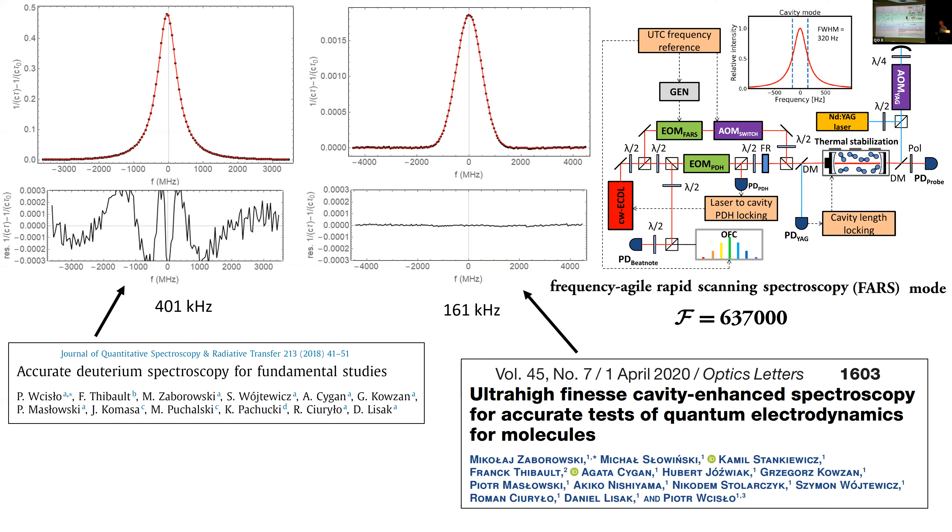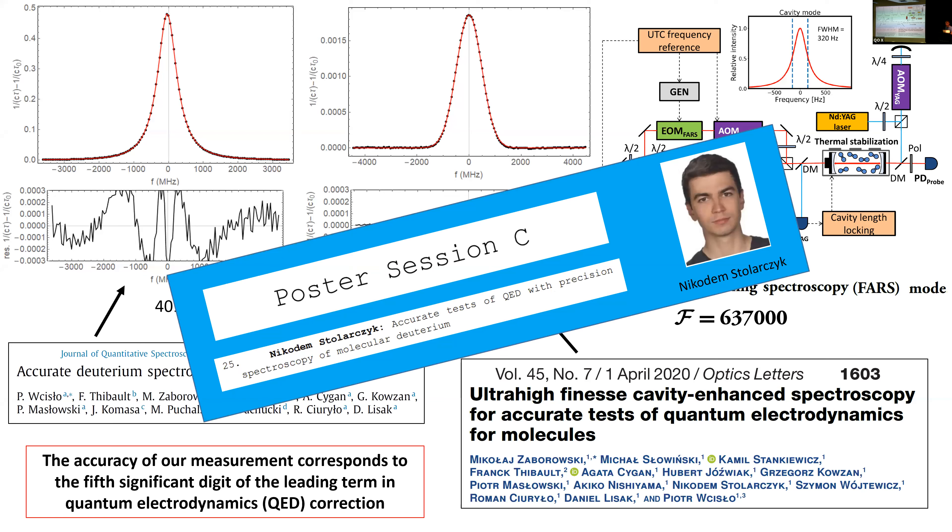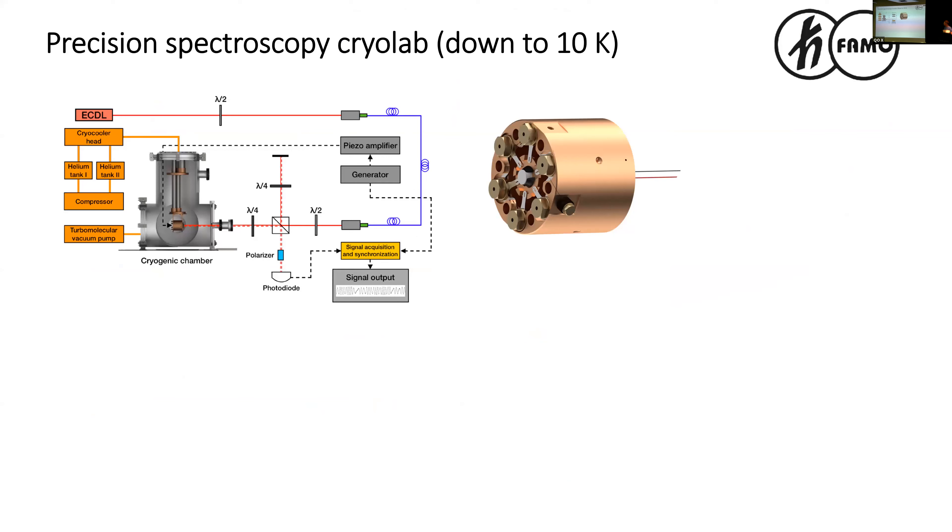We are focused on D2 isotopologue, but it doesn't matter really for the comparisons. Maybe I can direct you to the poster which will be presented during this poster session. All I want to mention in the context of Krzysztof's talk is that our comparison with Krzysztof's calculations validates the quantum electrodynamics correction of molecules at 50 significant digits.